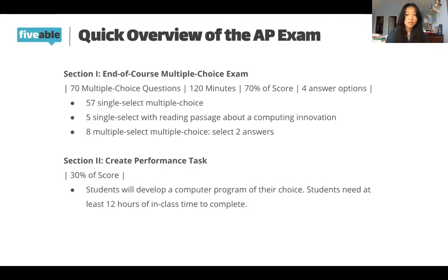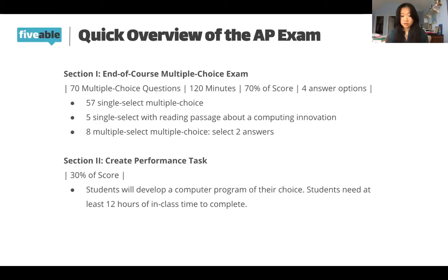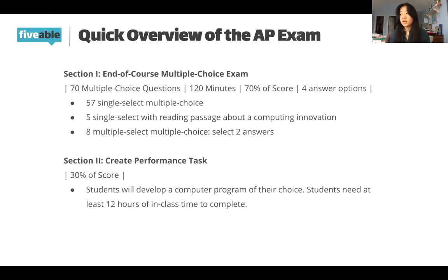Since this is 70% of your score, you definitely need to focus a lot on practicing multiple choice — you can't rely on the other section to bring up your score. Within section one there are 57 single-select multiple choice questions and five single-select questions about a reading passage on a computing innovation, which replaced the old Explore section. It's important to know the specific definitions of computing innovations so you don't get those questions wrong.